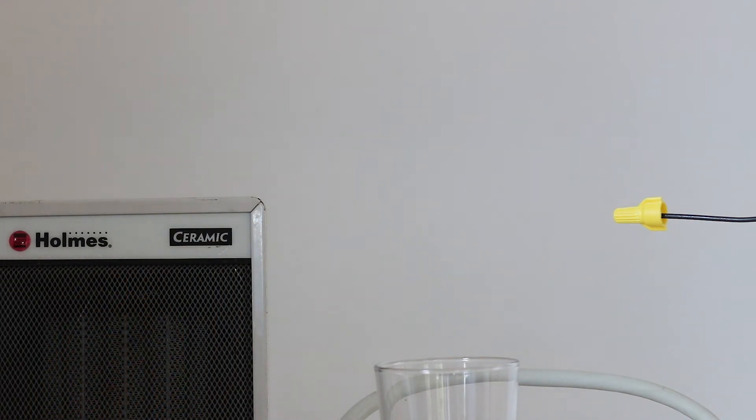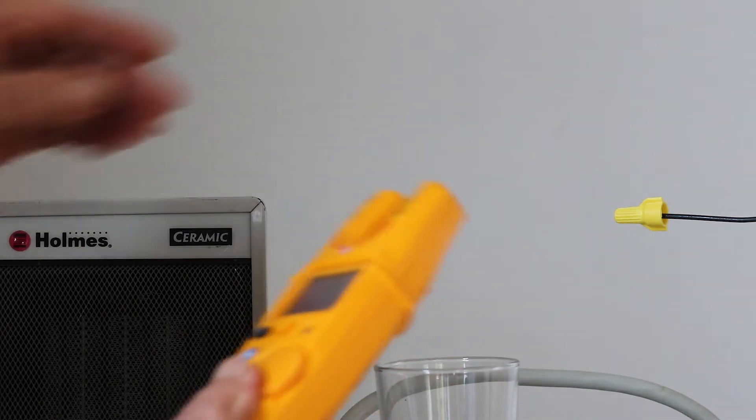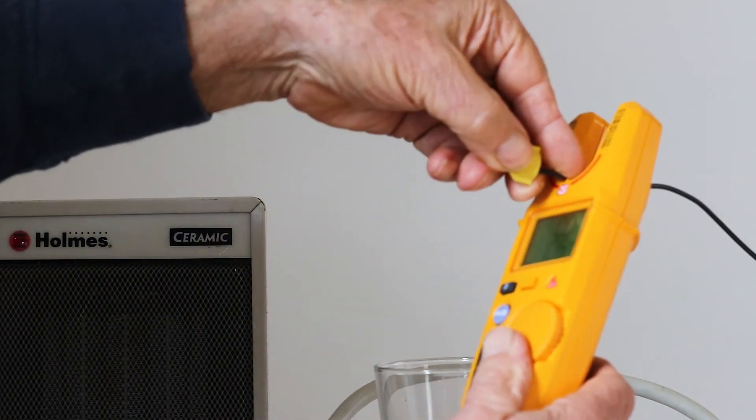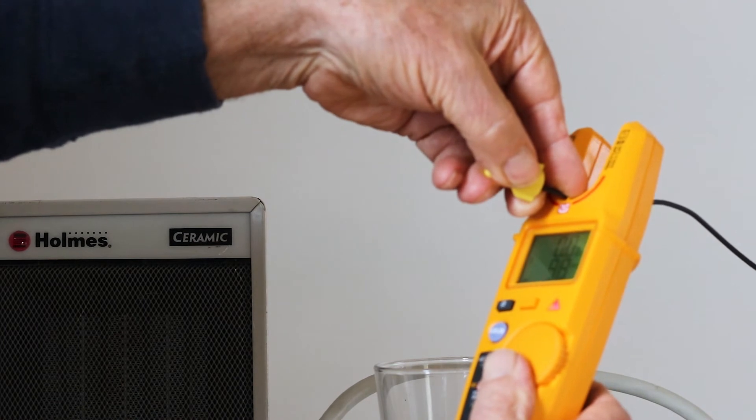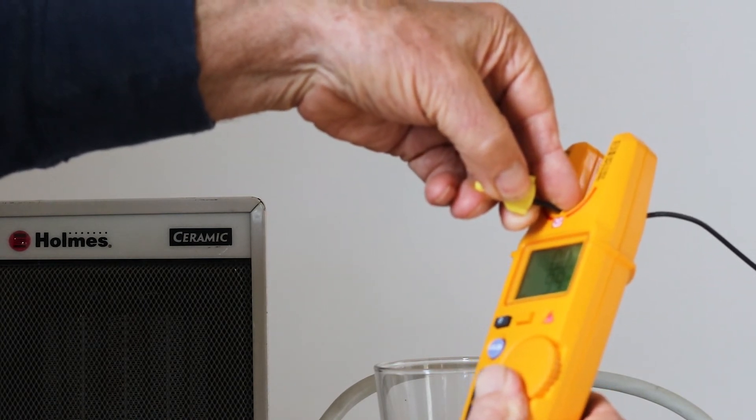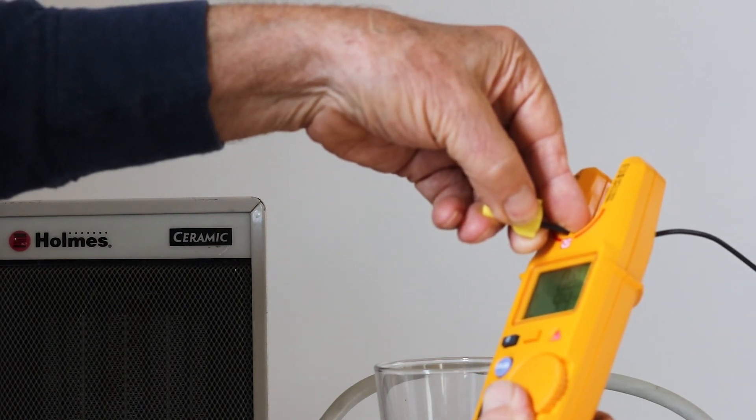An amazing thing about this meter is that the readout will become green when it is ready to measure. As you can see, I have a single wire energized from a 120 volt branch circuit. The readout has turned green, and it's right now reading 99 volts, which is about right considering all the wires it's going through.